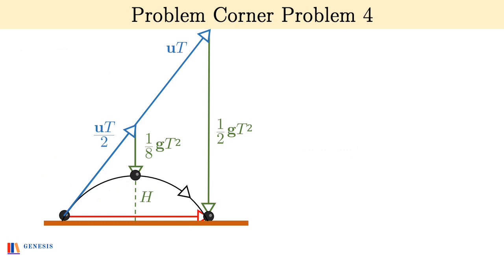As this side is half of this side and these triangles are similar, this perpendicular must be half of this one. And so H + ⅛gT² is half of ½gT², which gives us H = ⅛gT².